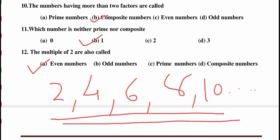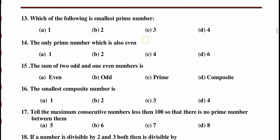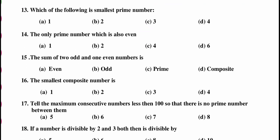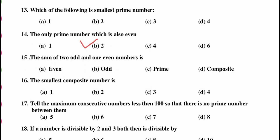Question number 13: which of the following is the smallest prime number? Prime numbers start from 2, and the smallest prime number is 2. It is also the only prime number which is even. So the answer is 2.